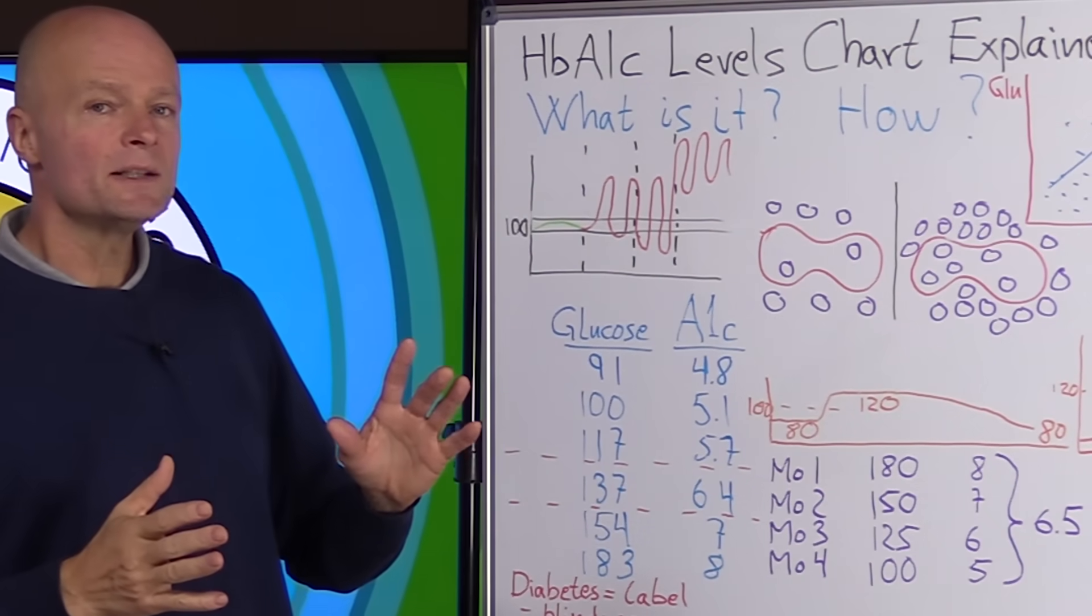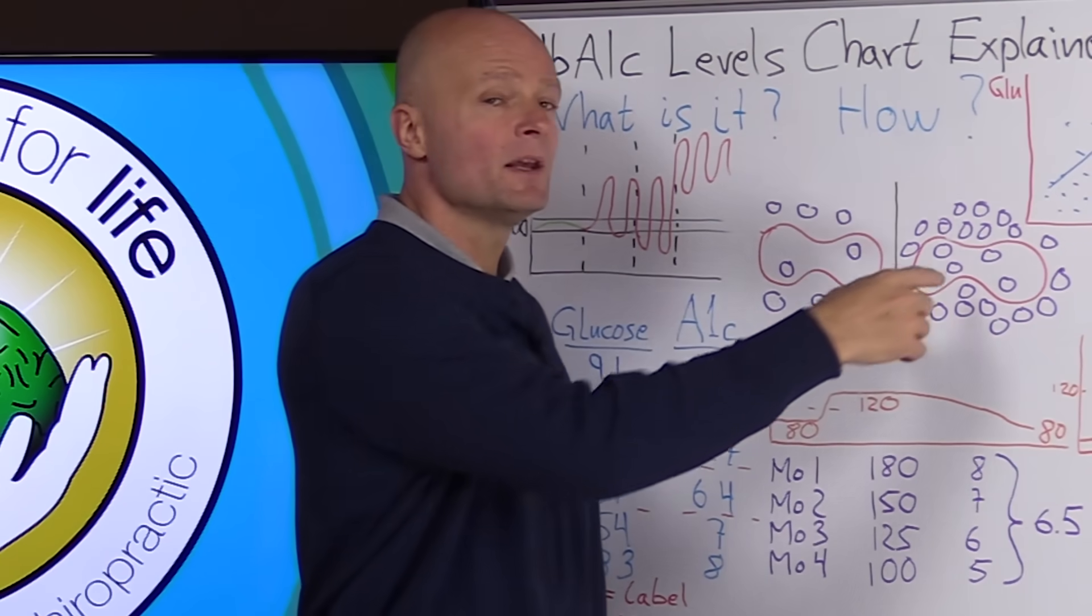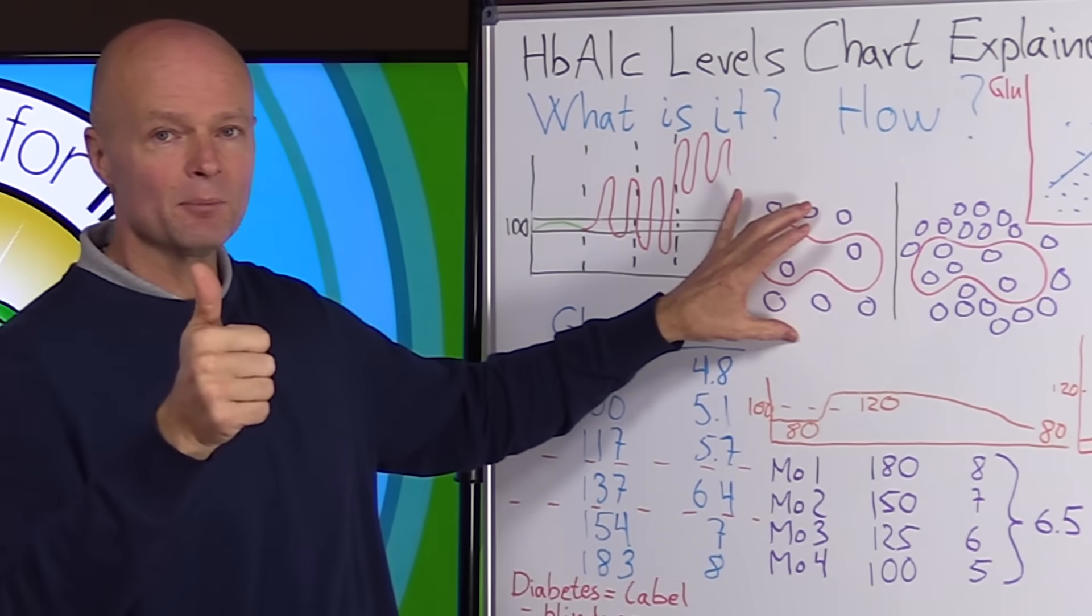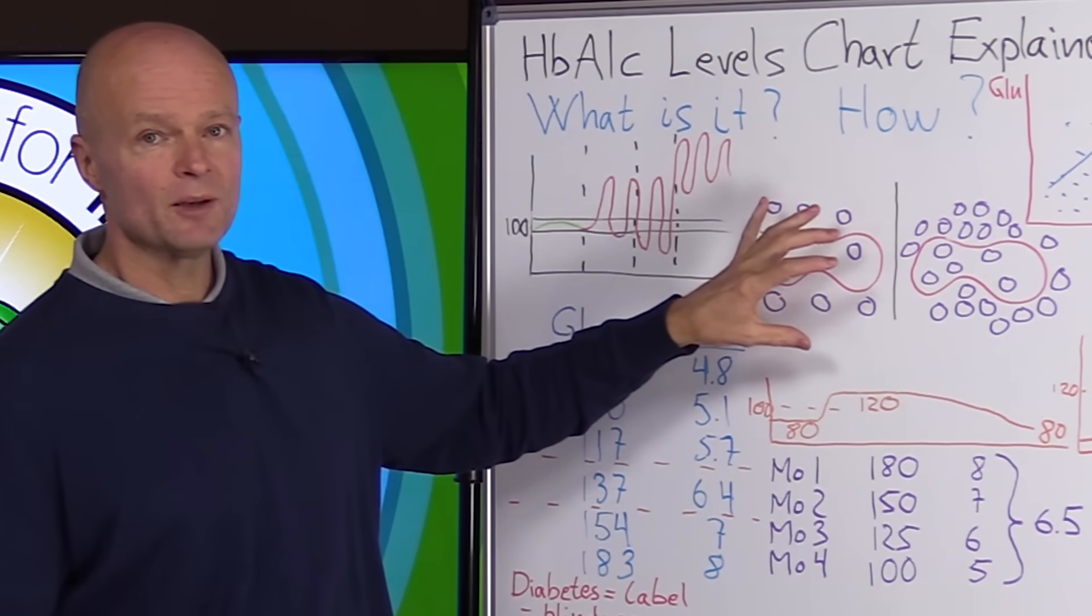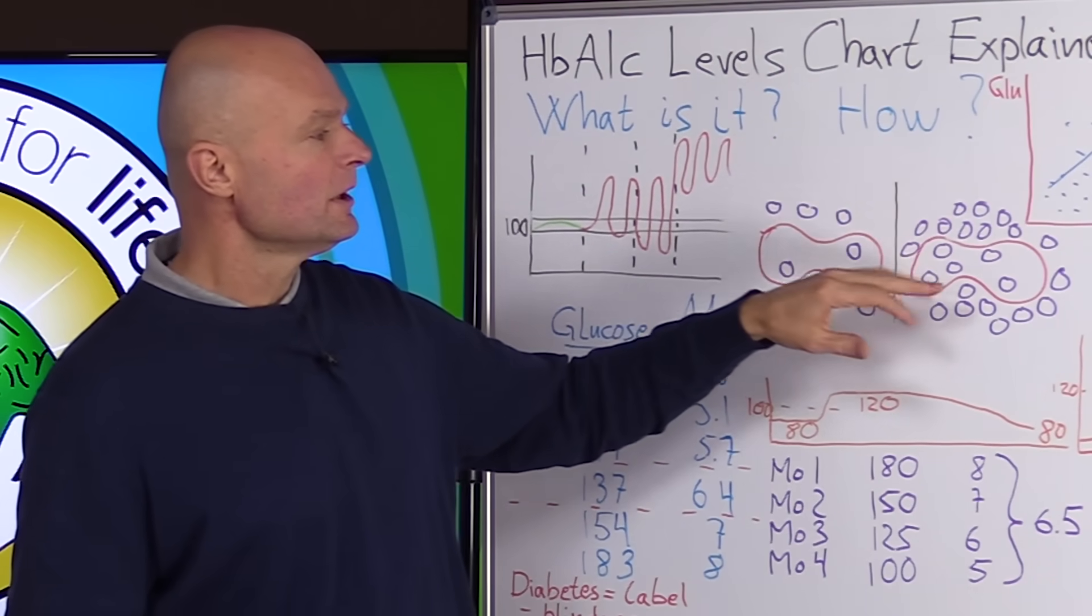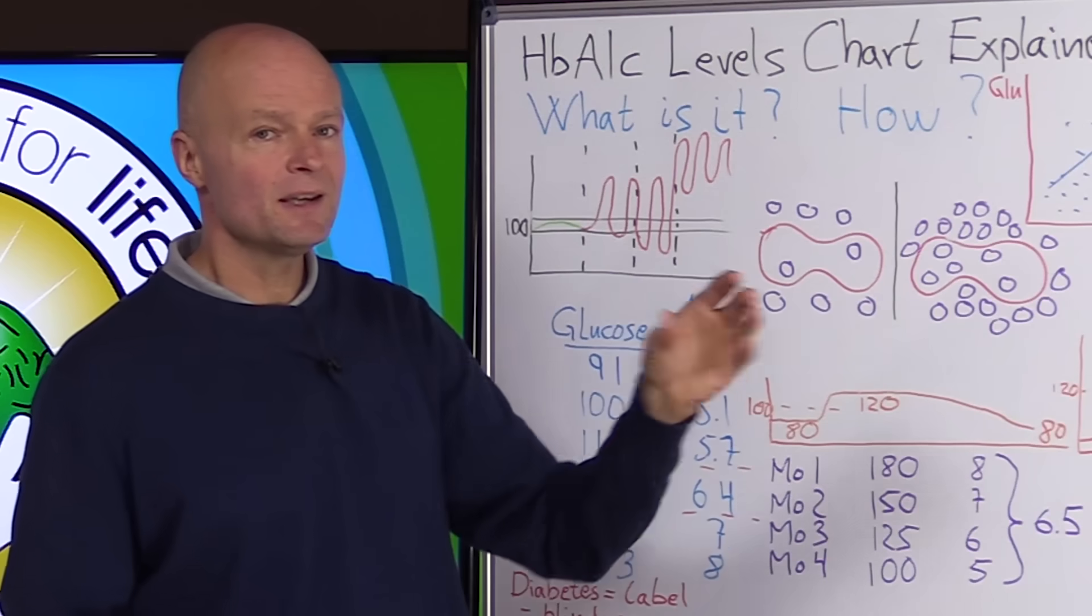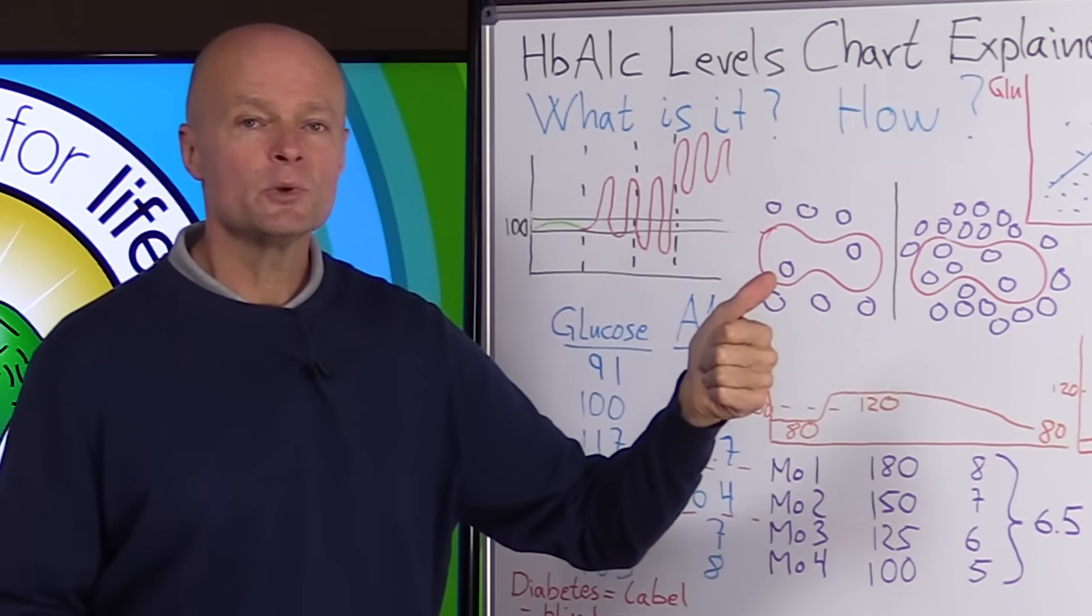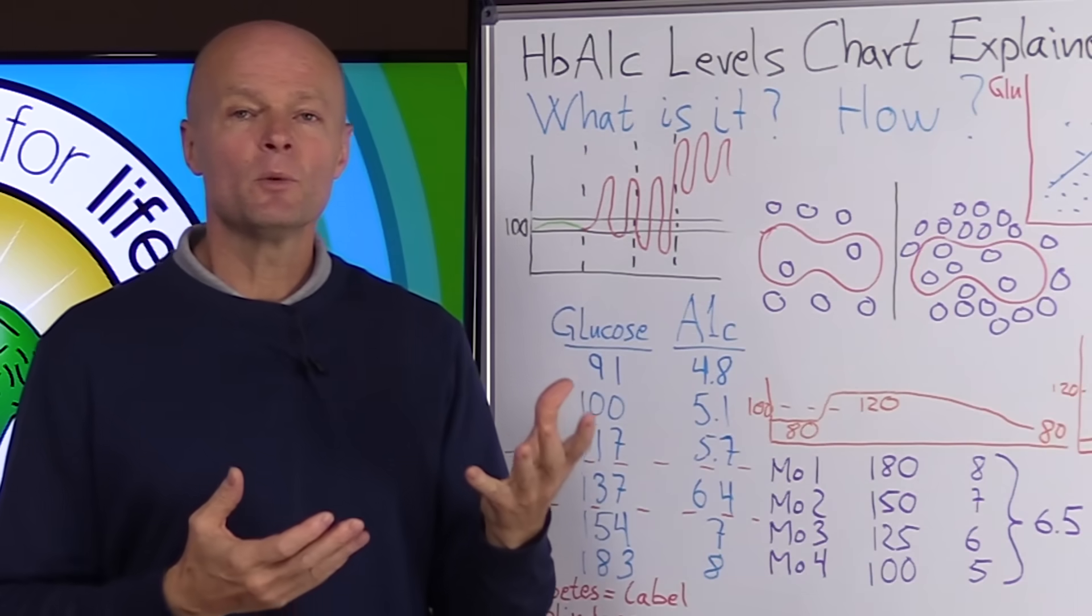So what they found was that the red blood cells are floating around in the bloodstream and if there's a lot of sugar in the bloodstream meaning high blood glucose, some of that sugar is going to get stuck to the red blood cells to the hemoglobin. And if there's more sugar in the bloodstream there's going to be more sugar stuck to the hemoglobin. So they can measure the percentage of hemoglobin with glucose stuck to it and they come up with a measurement hemoglobin A1c.